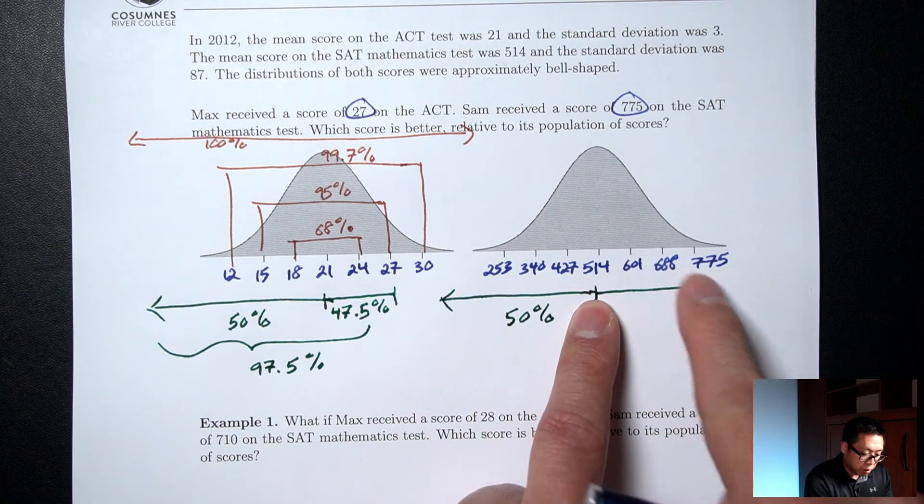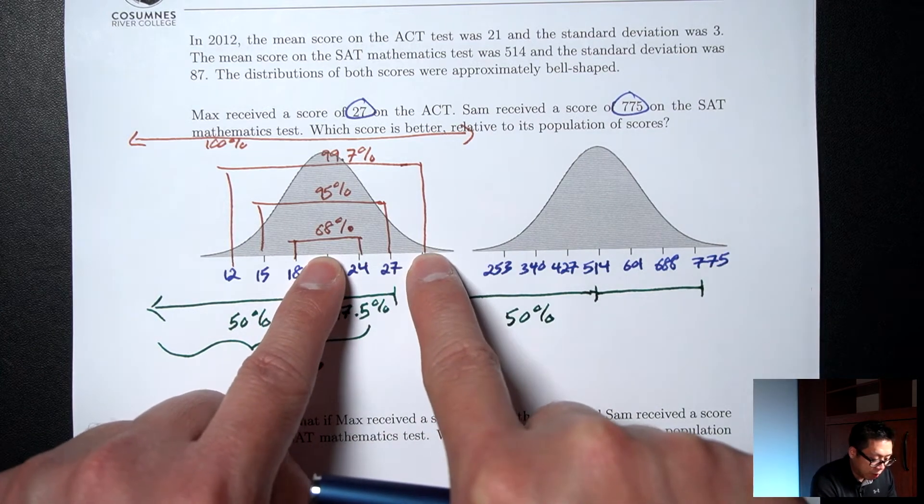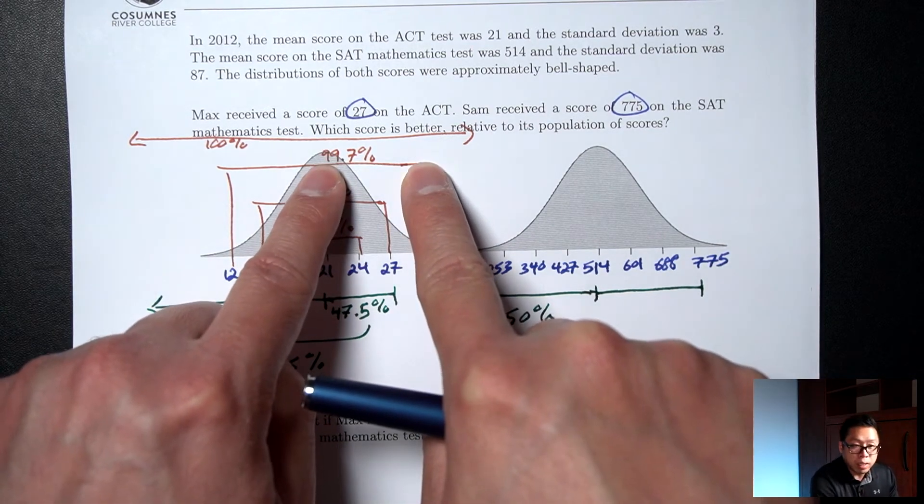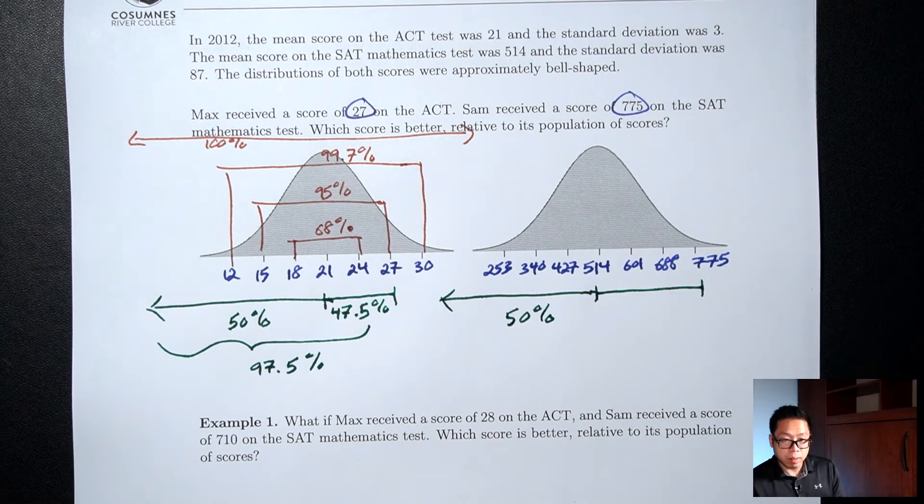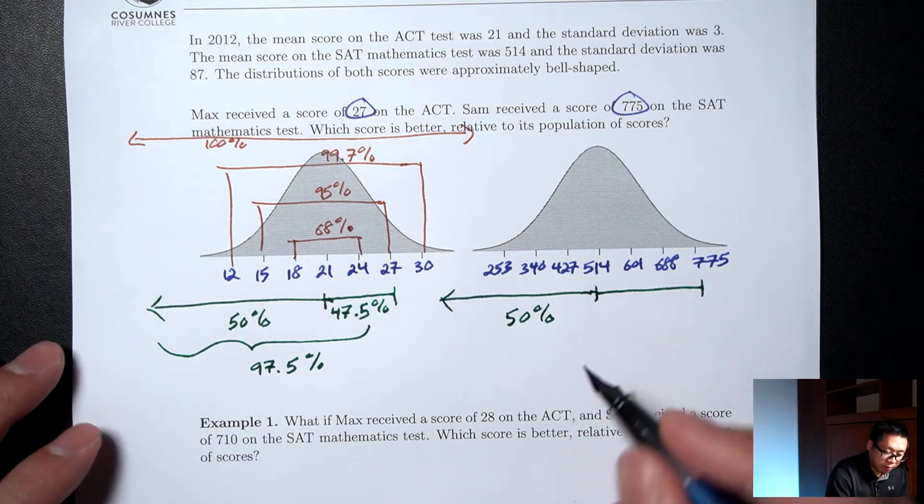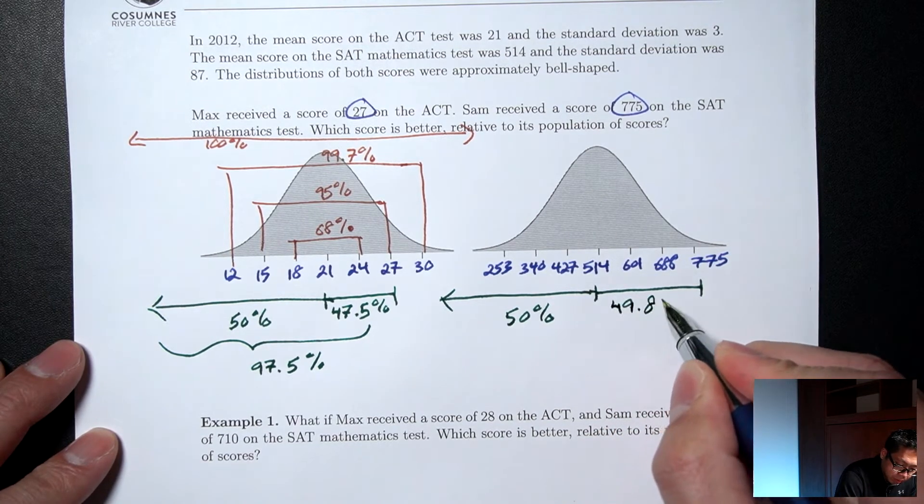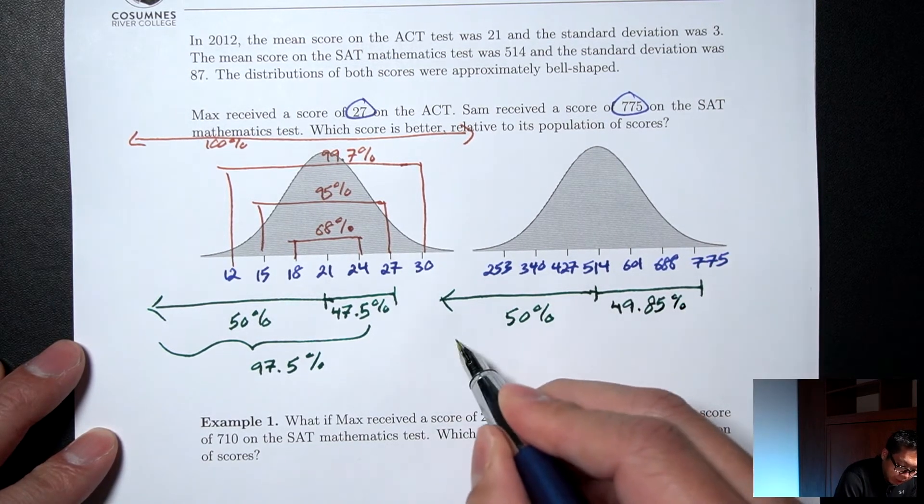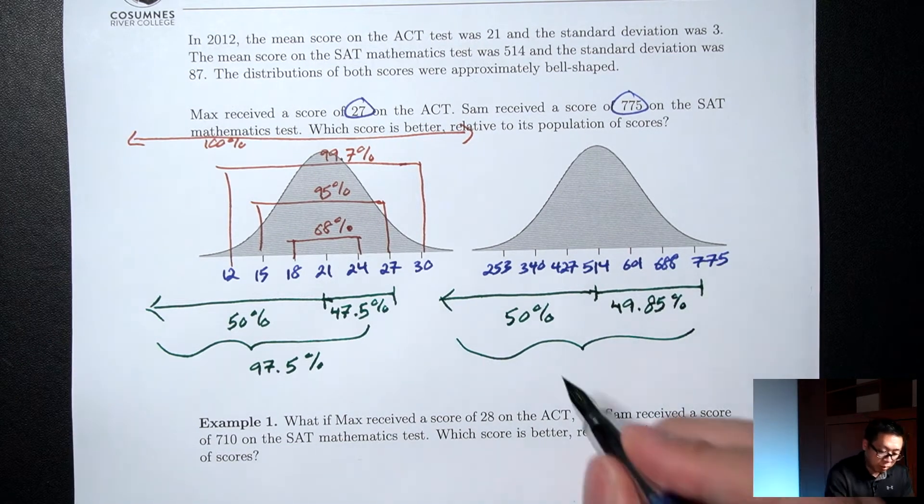Now middle to 3 above, so middle to 3 above should be half of the 99.7%. So half of 99.7% is 49.85%. And together, add these up, this is 99.85%.